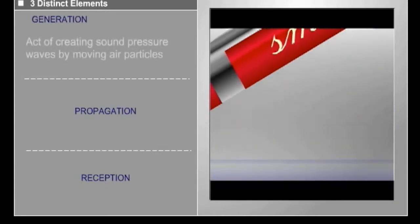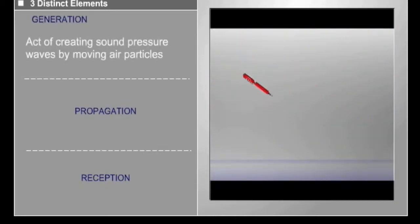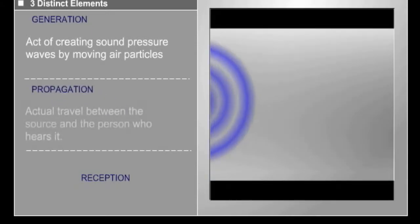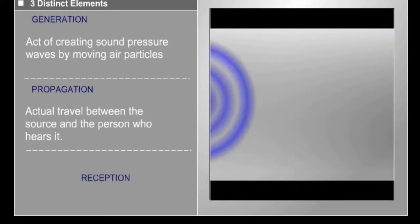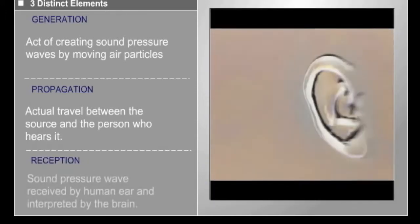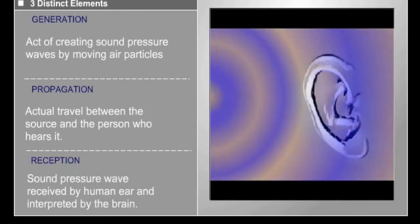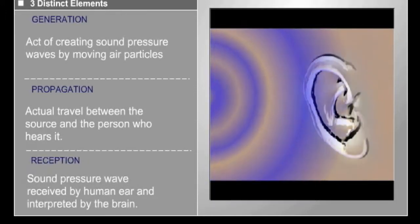Generation is the act of creating sound pressure waves by moving air particles. Propagation is the actual travel between the source or generator and the person who hears it. The last element is the receiver, that is, a human ear and the interpretation by the brain.